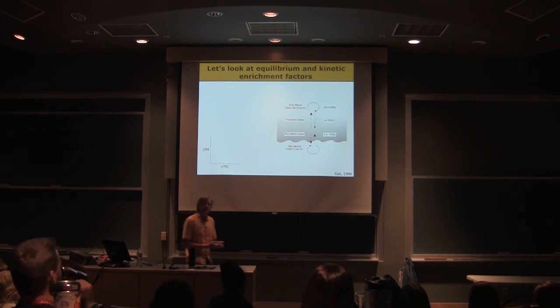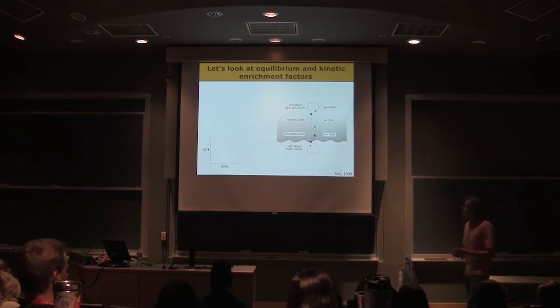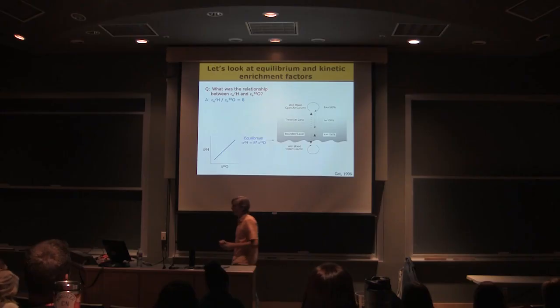So let's look at the evaporation process and its impact or how it's expressed in terms of hydrogen-oxygen isotope relationships. We saw that the equilibrium process gives a certain relationship. What's the slope of that relationship for the equilibrium process? Eight. So there's our equilibrium process, and it's happening at this boundary layer liquid water interface. We would expect to see a relationship of eight to one in terms of the shift in values between the liquid and the boundary layer vapor, if we could go in and measure the boundary layer vapor.